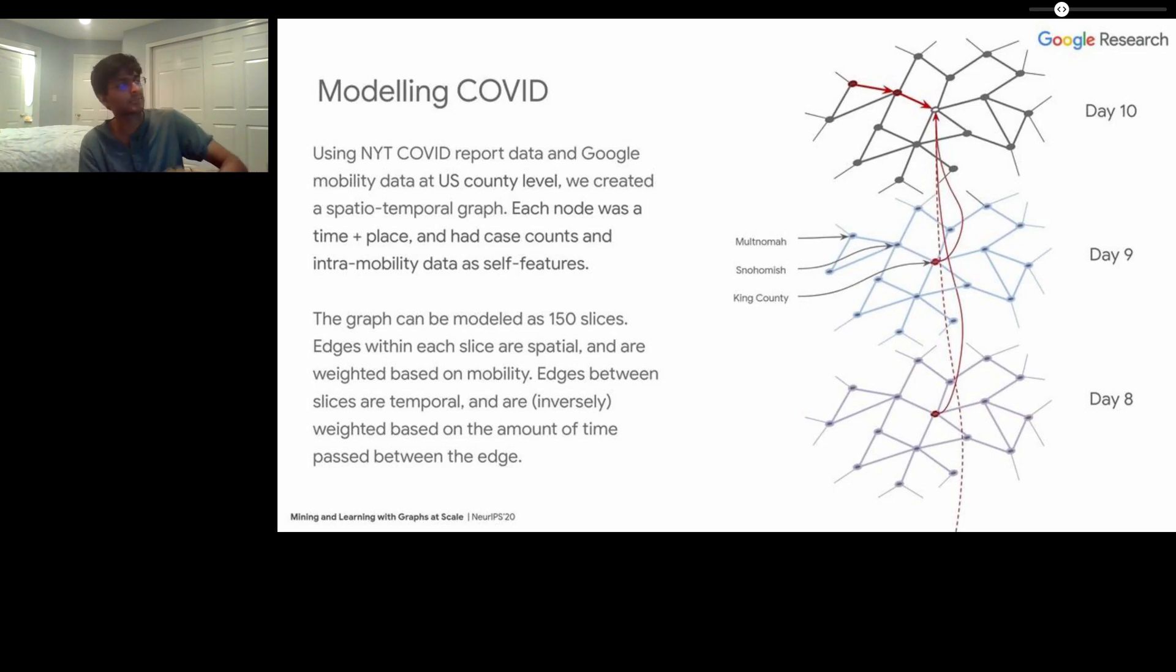Using the New York Times COVID report data and Google mobility data at a US county level, we created the spatial temporal graph. Each node represented a time and a place and had case counts and intra-mobility data as self features. The graph can be visualized as 150 slices, where each slice represents a day from January 1st to May 31st of 2020. Edges within each slice are spatial and represent the mobility or amount of human movement between two counties, while edges between slices were temporal and were inversely weighted based on the amount of time that passed between the edge.